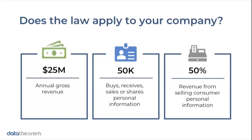The first thing we want to look at is: does the law apply to your company? It's not an 'and' of all these things — it's really an 'or.' Any one of these can put you within the scope of CCPA. The first is annual gross revenue of 25 million dollars or more. Second, you buy, receive, sell, or share personal information of 50,000 or more people, consumers, households, or devices. Or, 50 percent of your revenue comes from selling consumer personal information. Any one of these three puts you within scope.